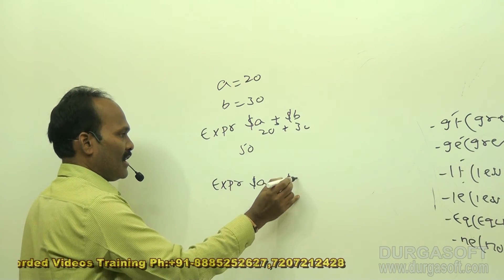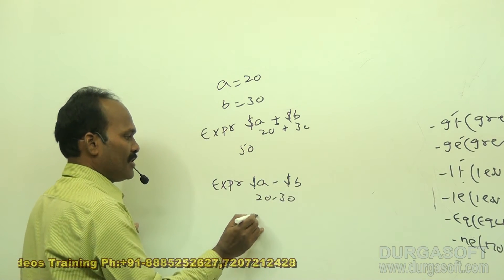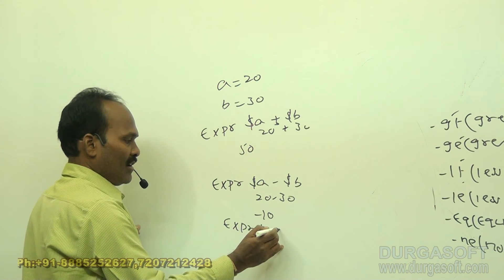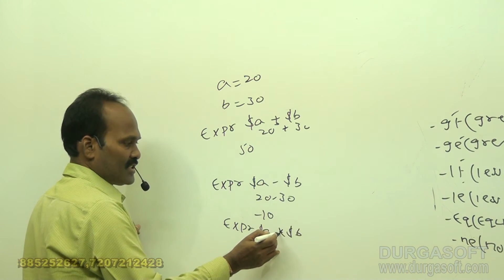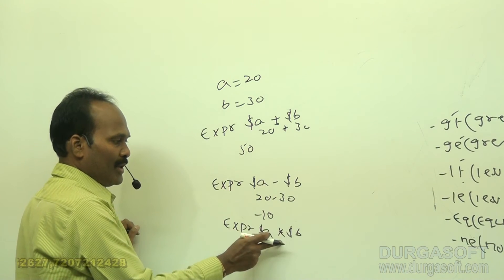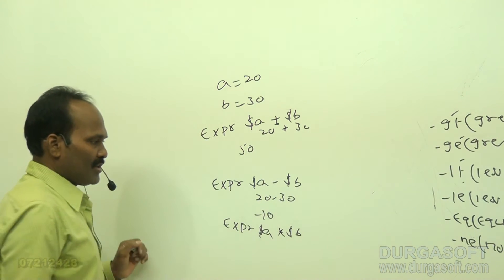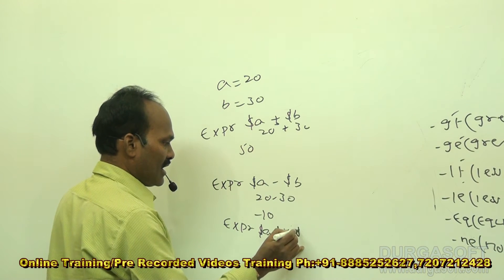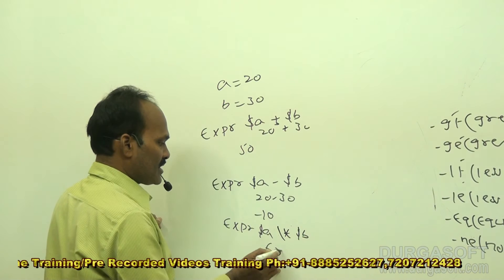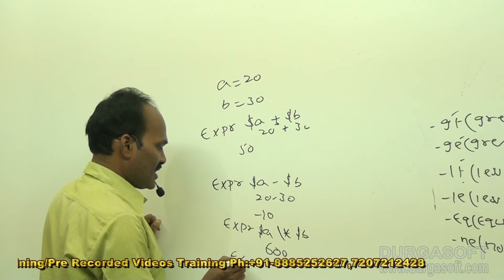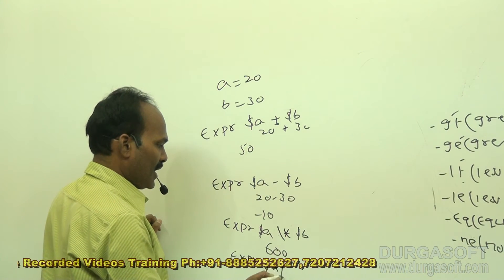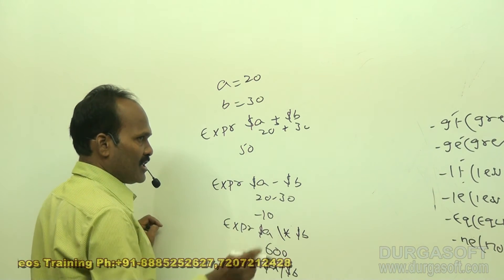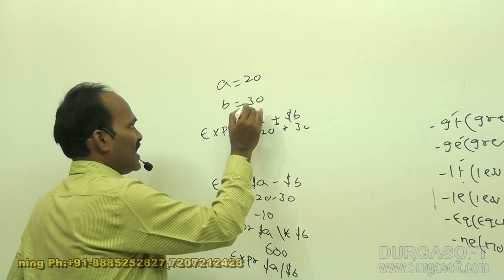Similarly, `expr $a - $b` gives 20 minus 30, which displays -10. For multiplication, `expr $a \* $b` — note you must escape the star with a backslash because it is a meta character in shell programming — gives 20 into 30, which is 600. For division, `expr $a / $b` gives 20 divided by 30, displaying 0.